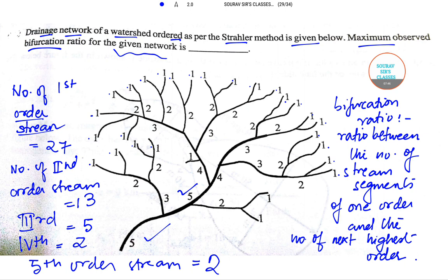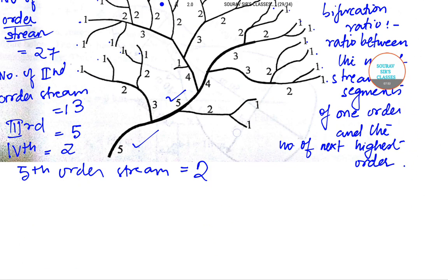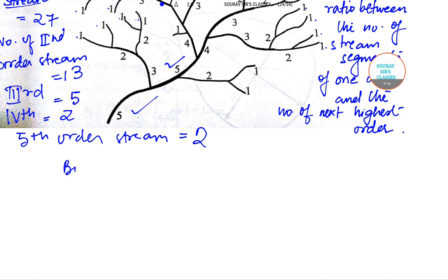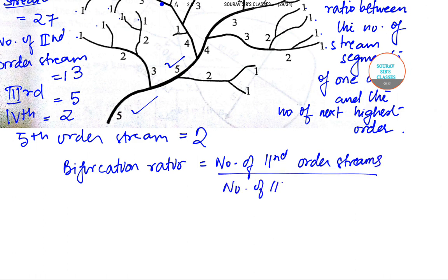Given this, we need to find the bifurcation ratio. Bifurcation ratio equals number of second order streams by number of third order streams. So here it is 13 by 5, and the bifurcation ratio becomes 2.6.